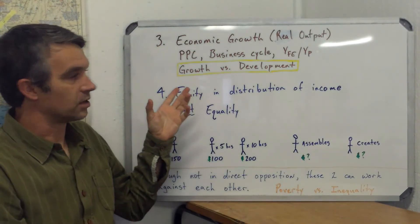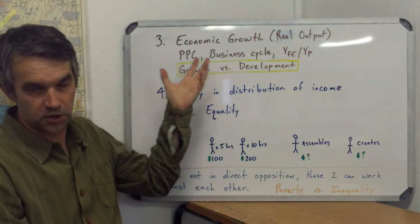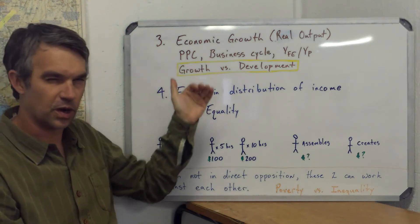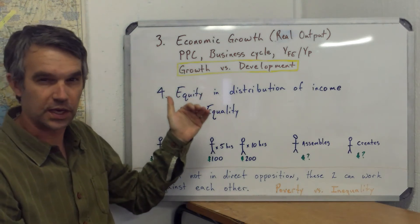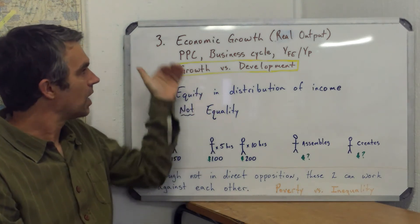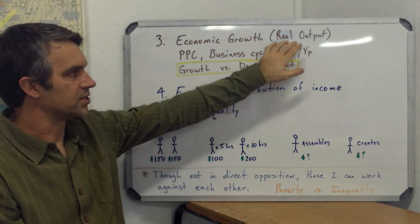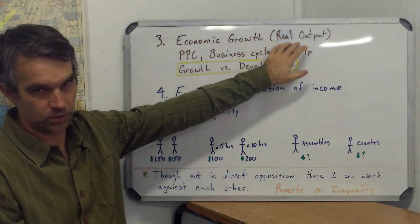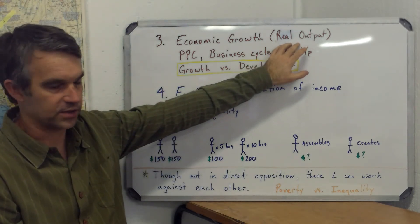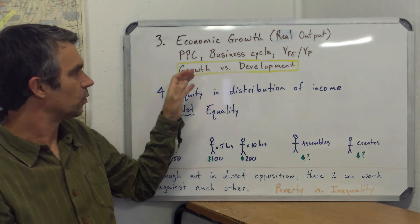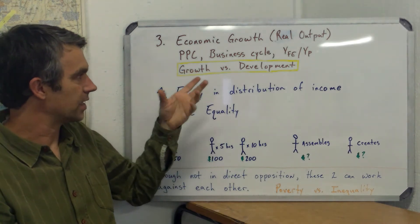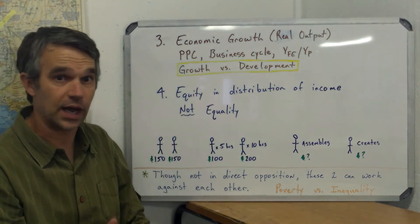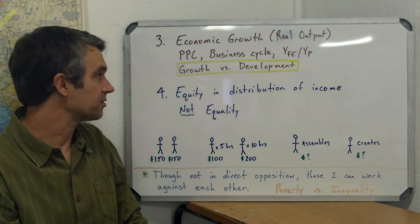The third and fourth objectives are also somewhat related to each other. The third is economic growth — we want to see real output in the country increase, independent of price level. We've talked about that already in a lot of different models.